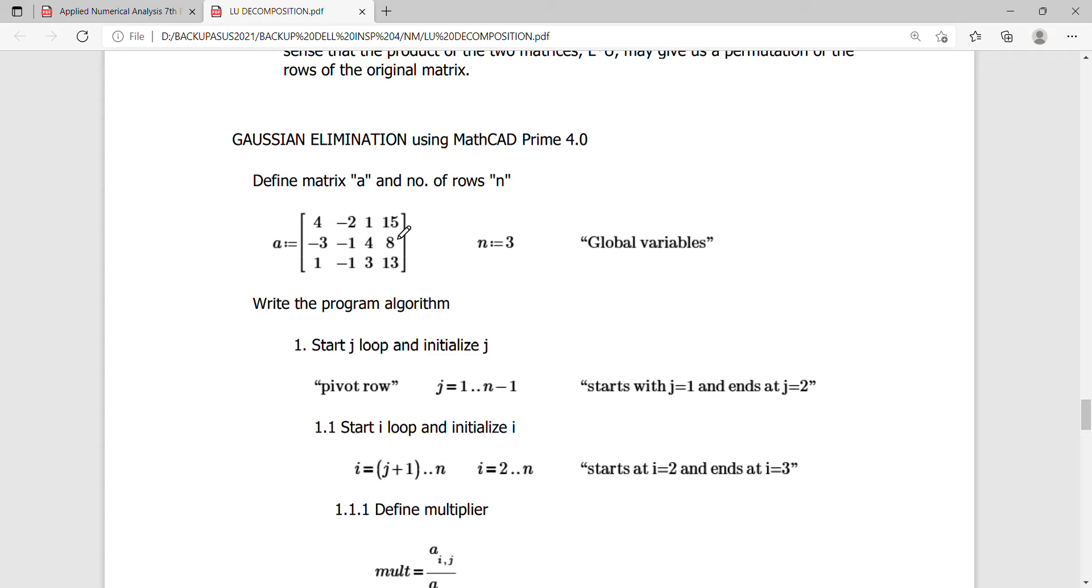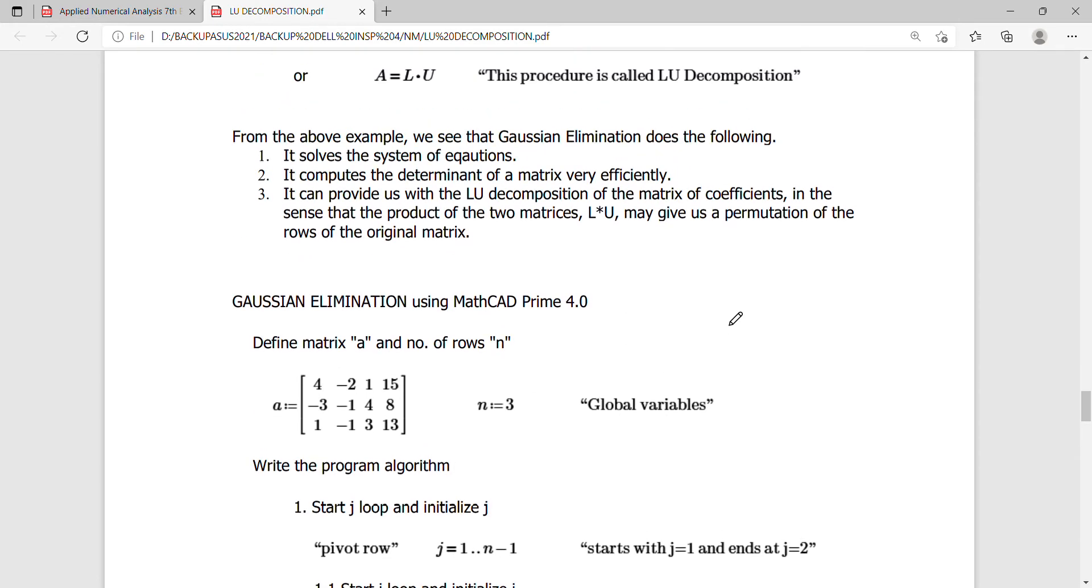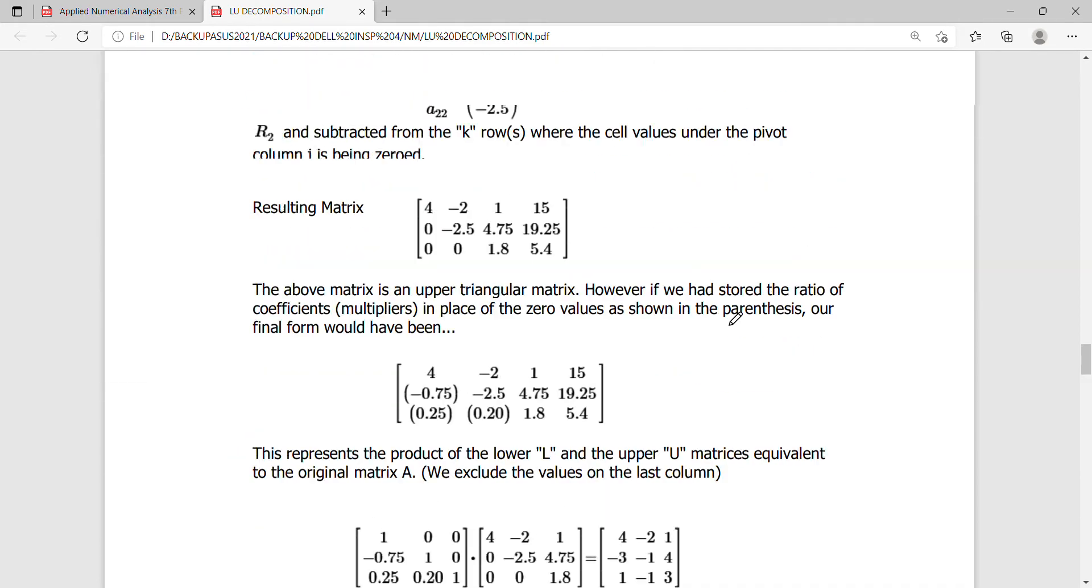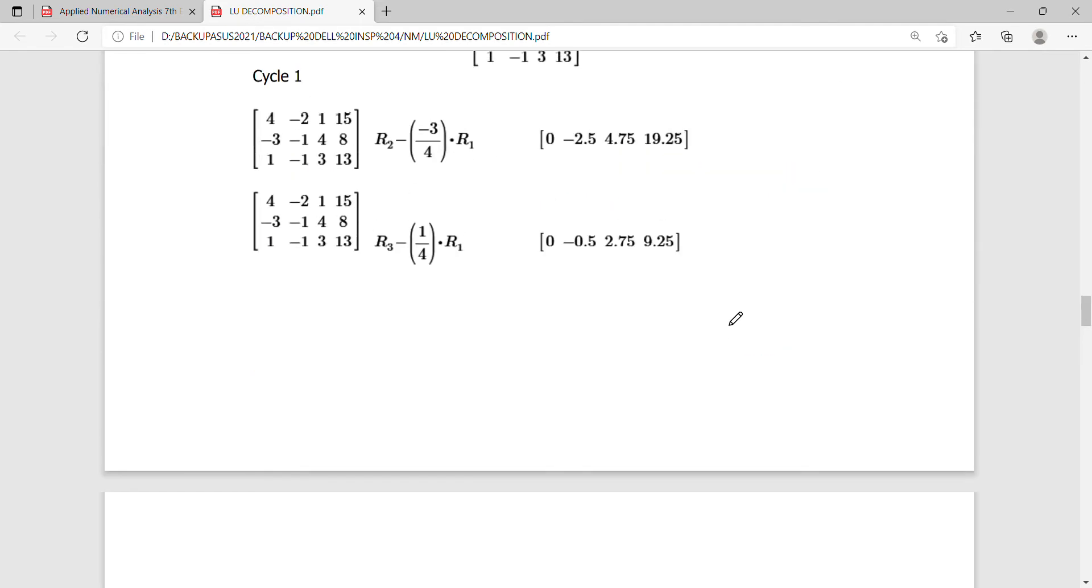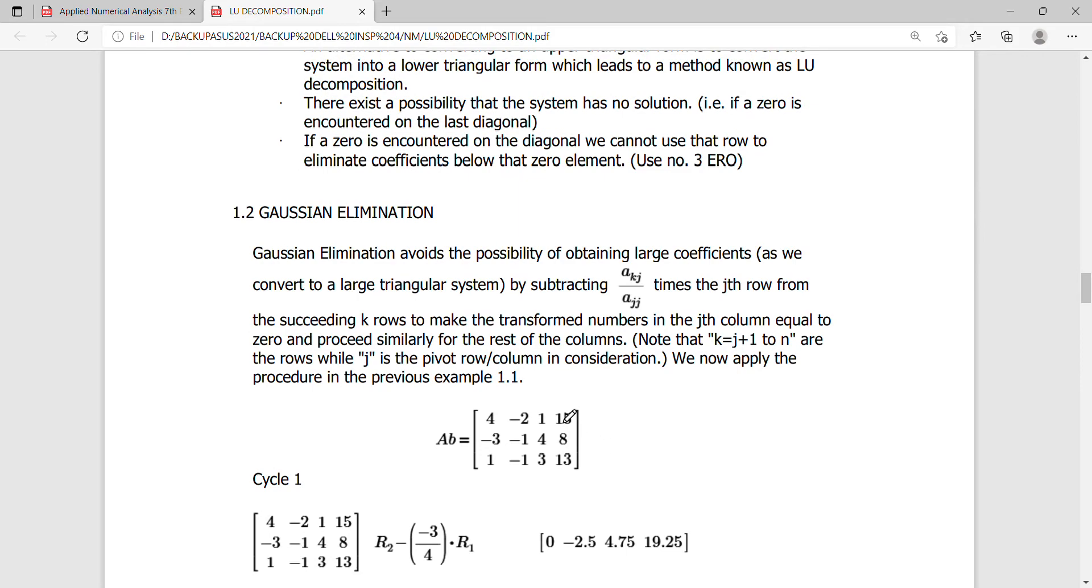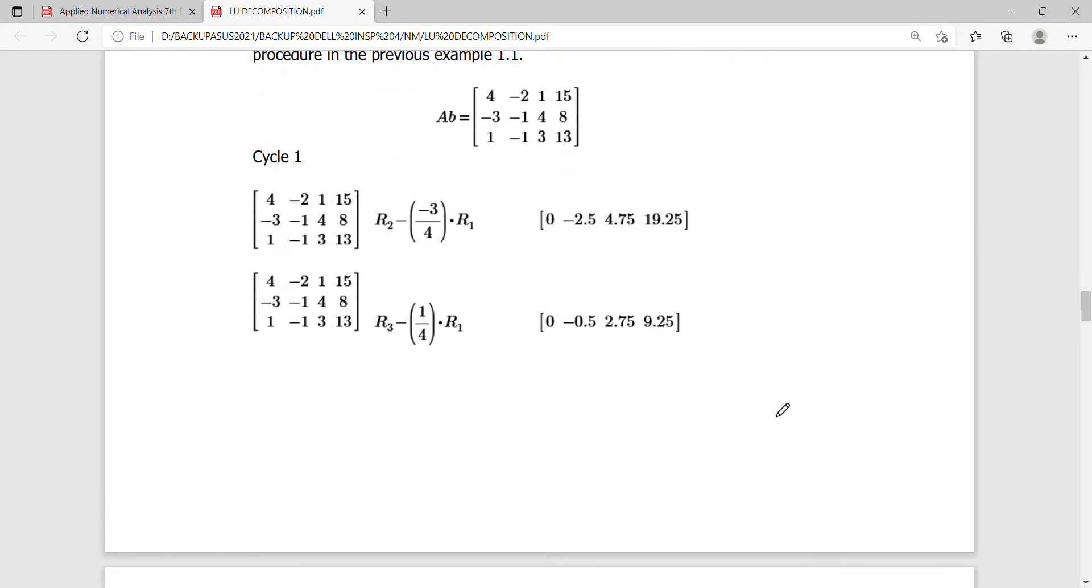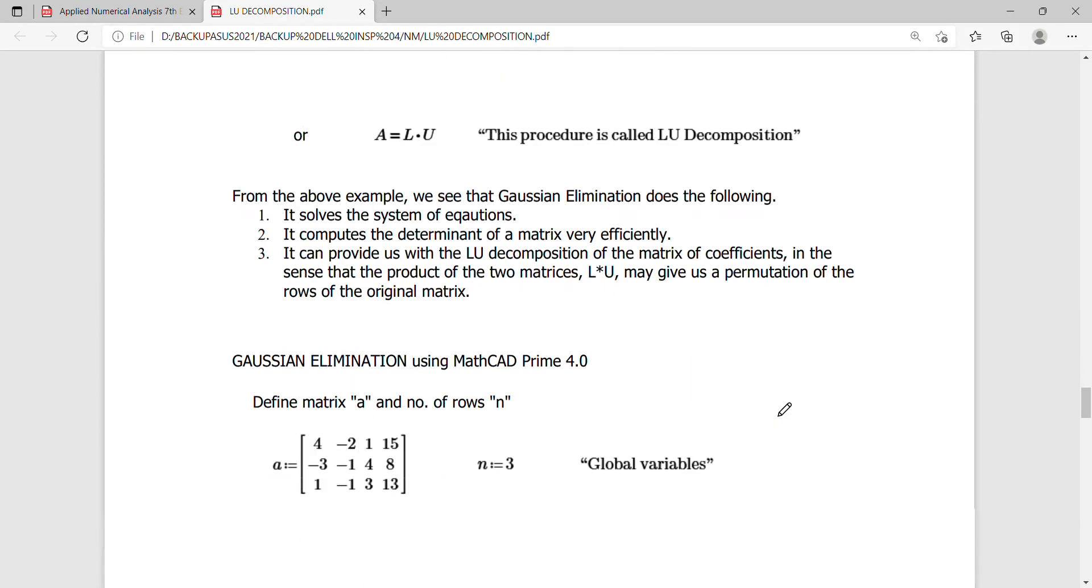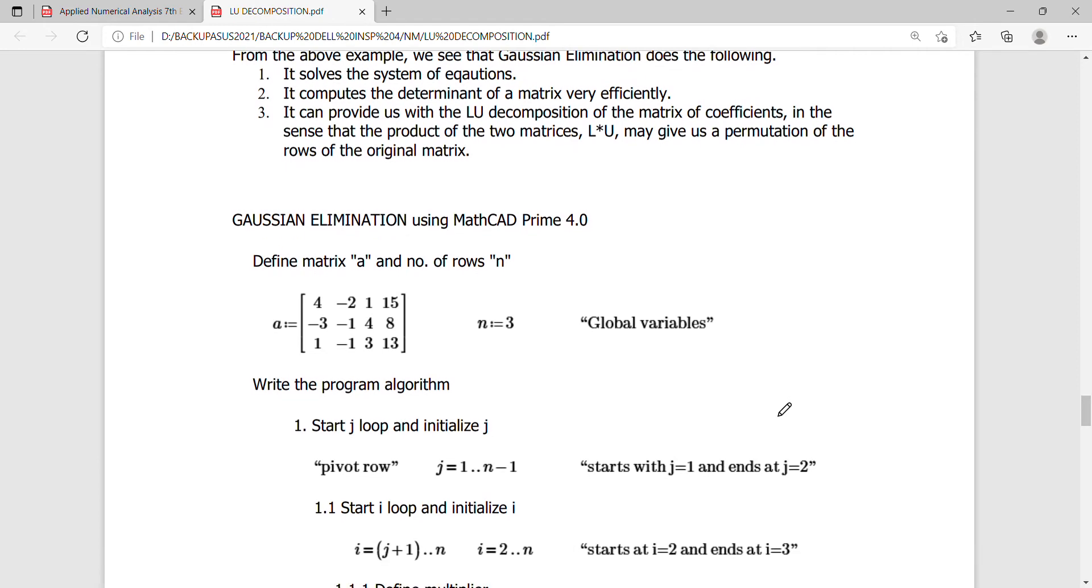The matrix I chose is the same matrix we solved last time, this augmented matrix AB, but this time we're going to use a program, an algorithm and an actual MathCAD procedure on how to reduce this matrix into an upper triangular matrix.